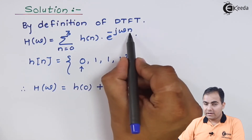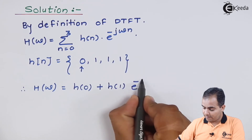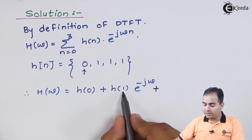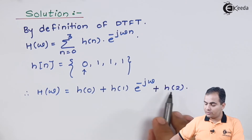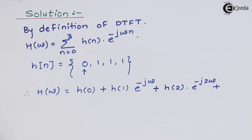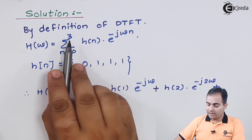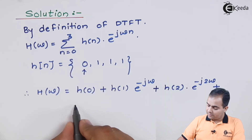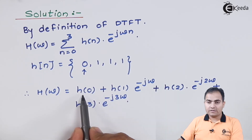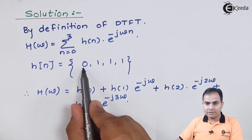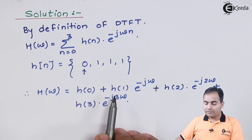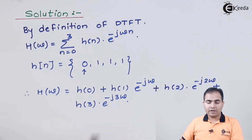Next sample is n = 1. This n is replaced by 1, so we write e to the power minus jω. Then we substitute n = 2, giving H(2) · e to the power minus j2ω. The last sample is n = 3. Now, the first sample — the origin sample — has amplitude 0, so that whole term is 0. The remaining samples H(1), H(2), and H(3) all have amplitude 1.